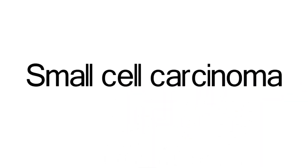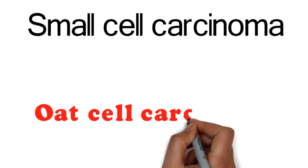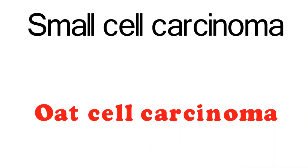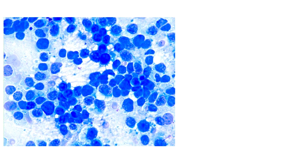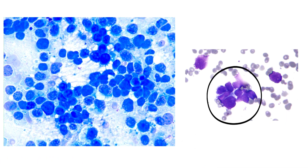Small cell carcinoma of the lung, which was earlier referred to as oat cell carcinoma, is composed of primitive-appearing cells. These cells are arranged in sheets, clusters, or ribbons and are round to oval with hyperchromatic nuclei and scant cytoplasm. Nuclear molding, smudging, atypical mitosis, and necrosis are very common.